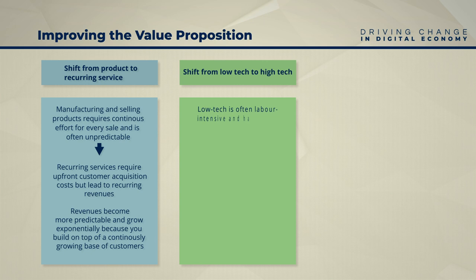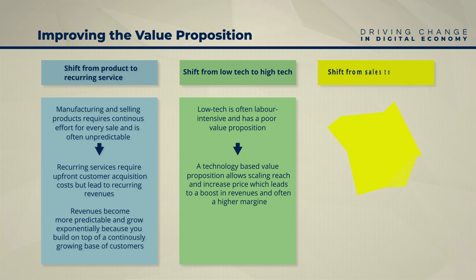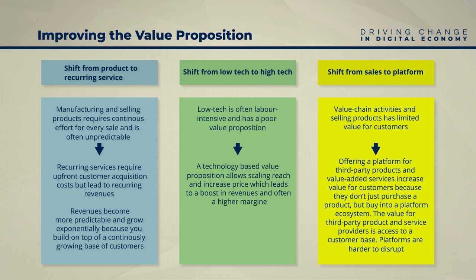Second, from low-tech to high-tech: this is the shift from basic, often labor-intensive, low-tech value propositions toward technology-based value propositions. This shift allows scaling reach and increasing price, leading to a boost in revenues. The increase in price and revenues compensates for new technology-related costs and often leads to higher margins. Third, from sales to platform: this is the shift from value chain activities and selling products toward products that become a platform for third-party products and value-added services. Value increases for customers because they don't just purchase a product but buy into a platform ecosystem. Platforms are harder to disrupt than simple products because they create resource and network effects.